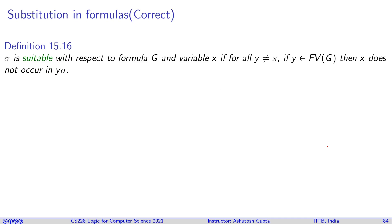Now let us look at the correct substitution formulation. For that, we need to define something called suitability of a substitution. What is when a substitution is suitable? Sigma is suitable with respect to formula G and variable x if for all y, for all y that are free in G, if you replace them by some other term, x should not be there. If x is there, then there's a problem. It's not suitable.